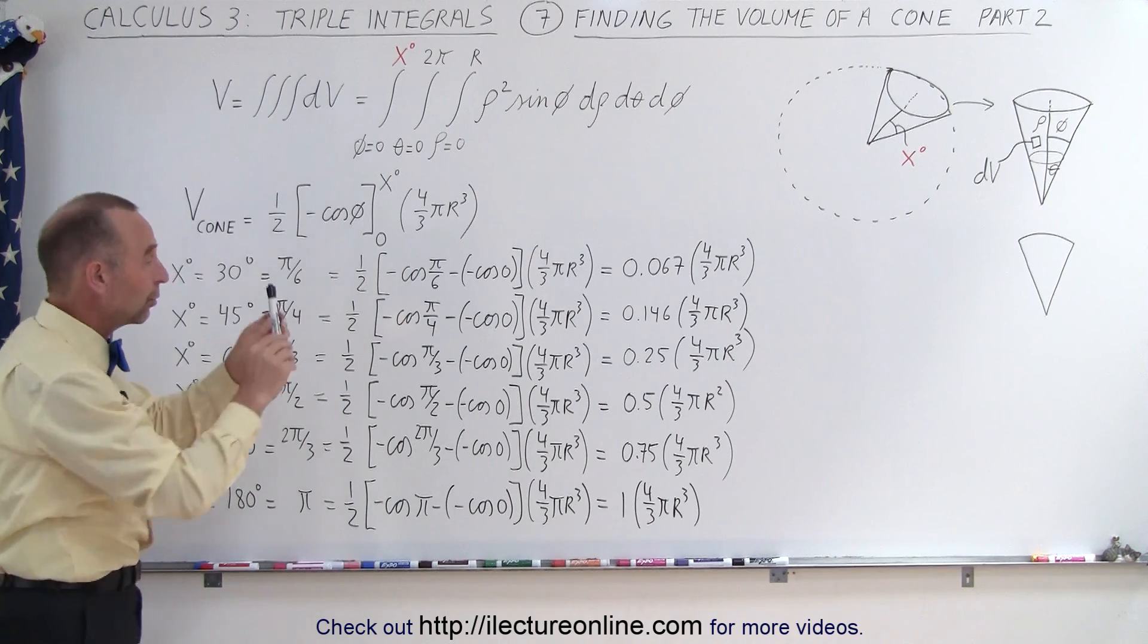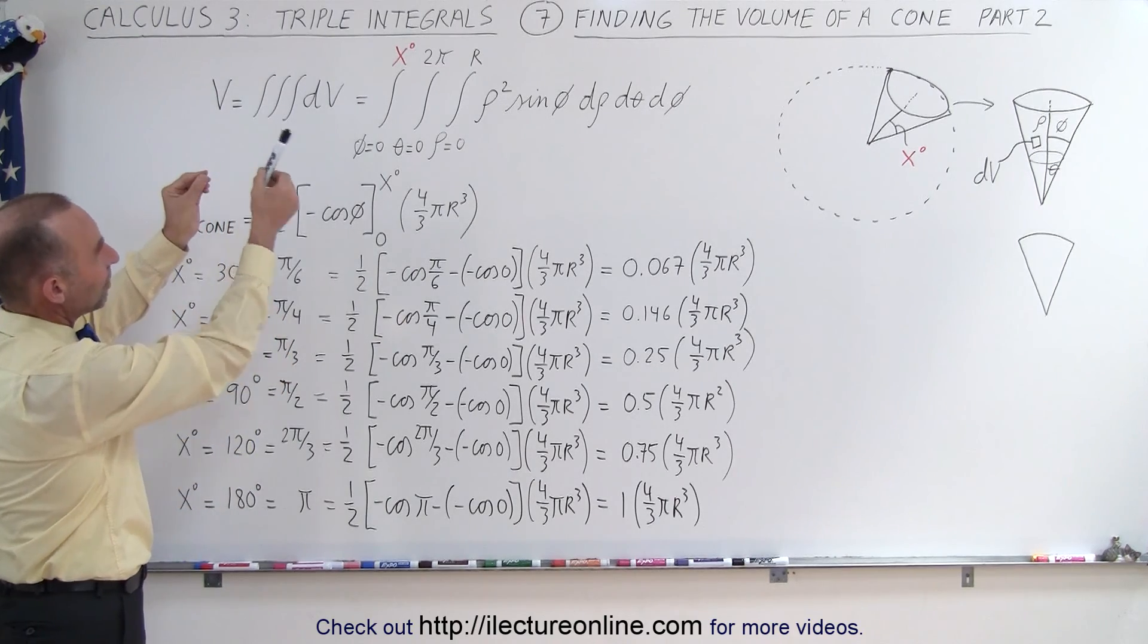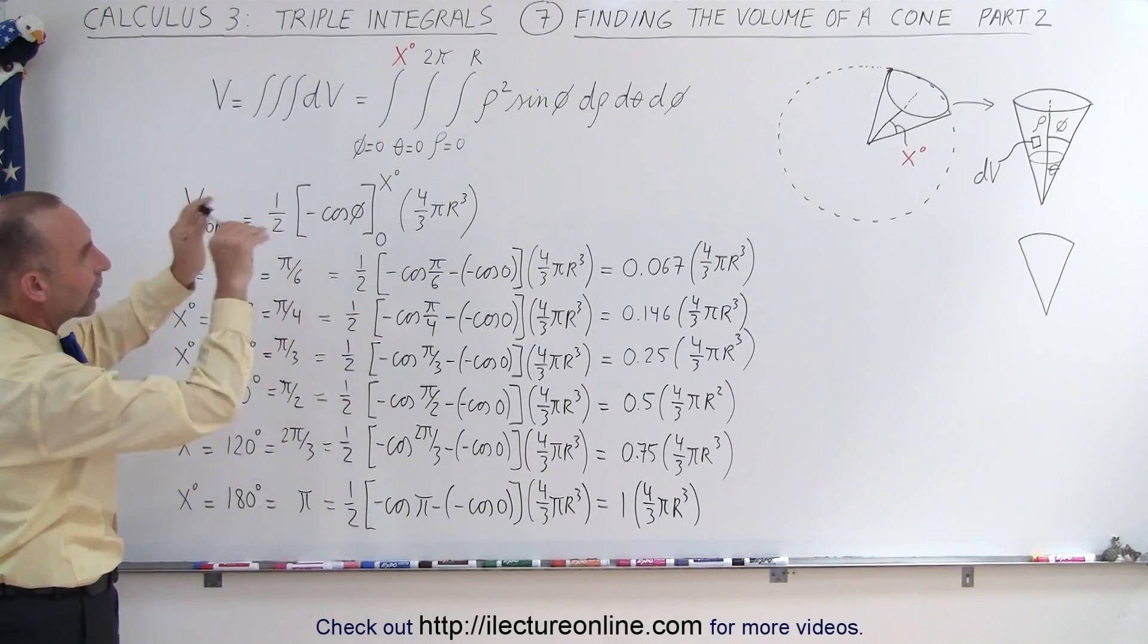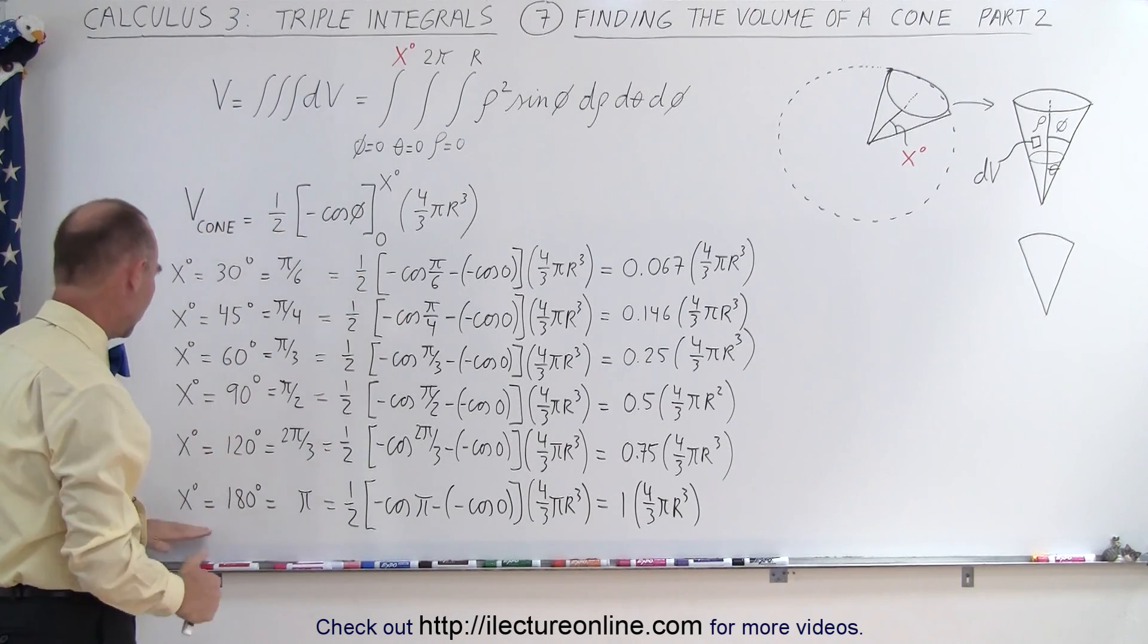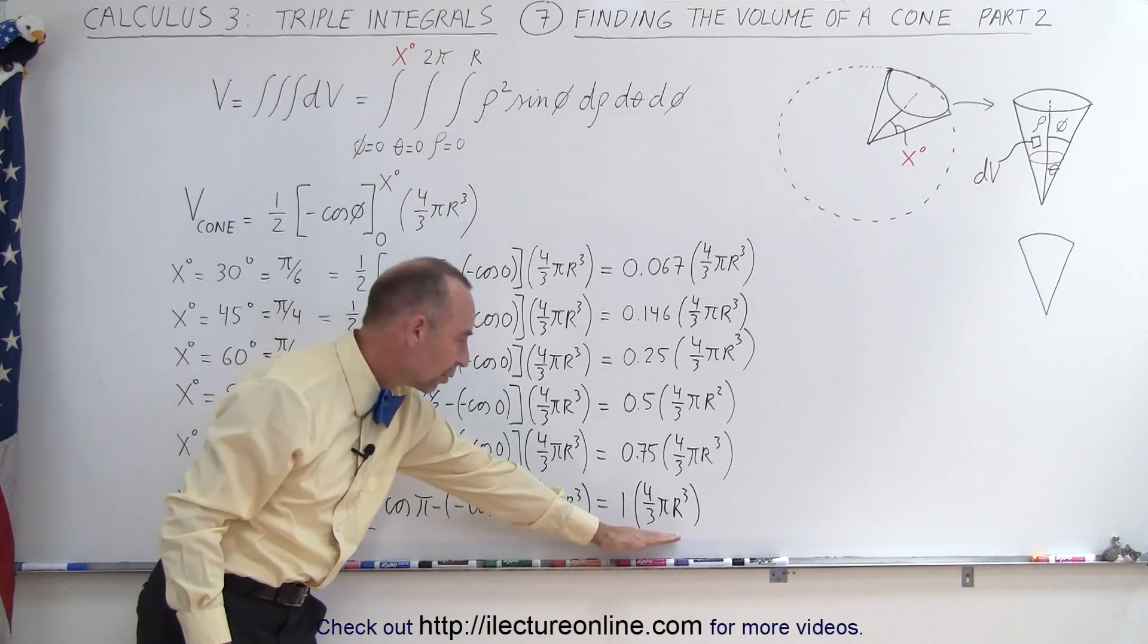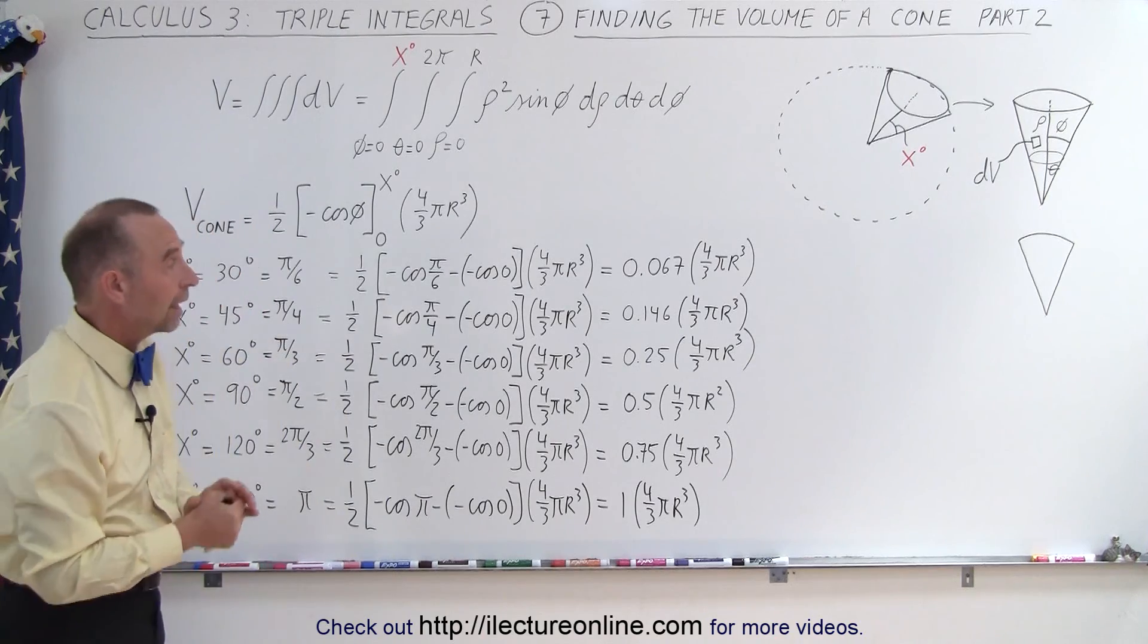When we make the angle 180 degrees we integrate the angle phi all the way from top to bottom. That means we're going to get the entire volume of the sphere and sure enough you can see that the volume will be four-thirds pi r cubed in that case.